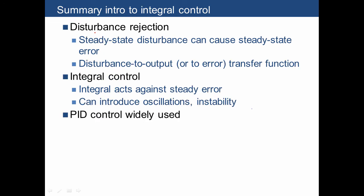The problem is of disturbance rejection, where a steady state disturbance can cause a steady state error in our system. The transfer function from the disturbance to the output or to the error is a way to describe how well disturbance rejection is handled.